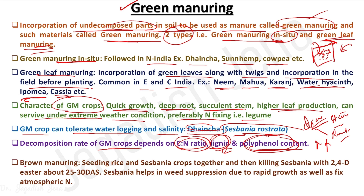Brown manuring is different from green manuring and green leaf manuring. In brown manuring, the green manuring crop is sown or broadcast into a direct-seeded rice crop. Direct seeded rice has more weed prevalence because there is no standing water. We broadcast the green manuring crop in the standing rice field, and after 25 to 30 days after sowing, we kill that green manuring crop.